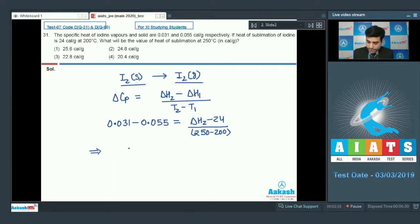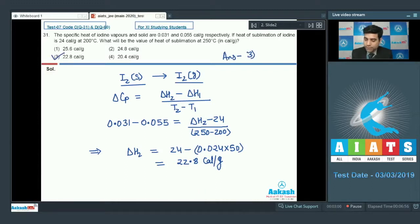So delta H2 will be equal to 24 minus 0.024 into 50. We can solve this to get the result and it is 22.8 calorie per gram. If I go through the options, correct answer is given on option 3. Hence, the correct answer is option 3.